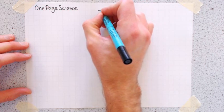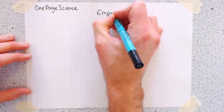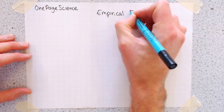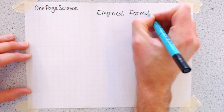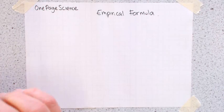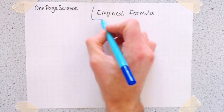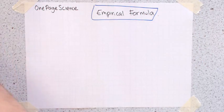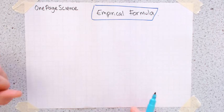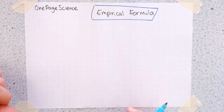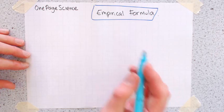In this video we're going to look at something called empirical formula. Let's draw a box around this before we get going. I'll give you a definition for the empirical formula in another video. We're going to look at how you do the calculations today.